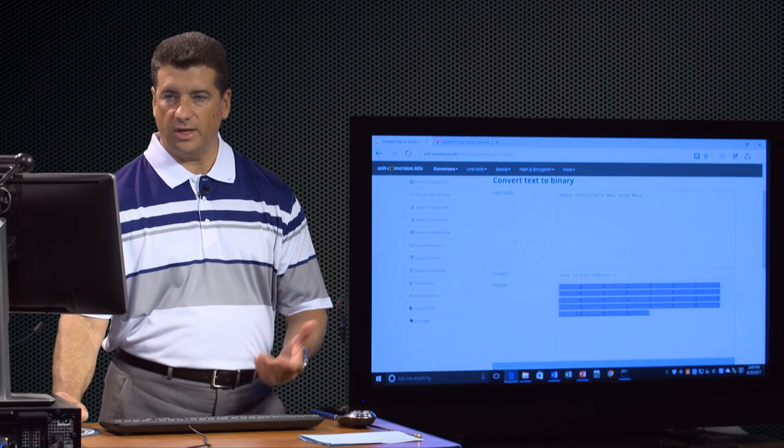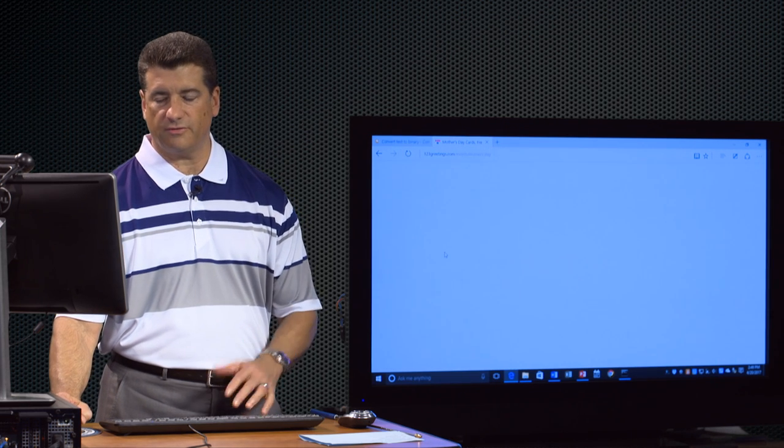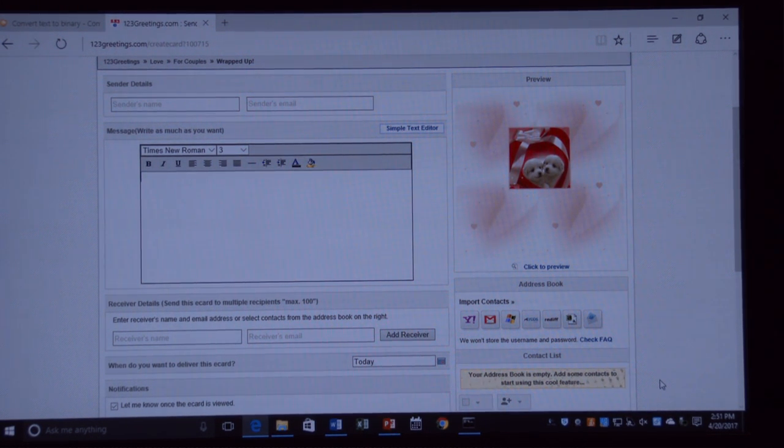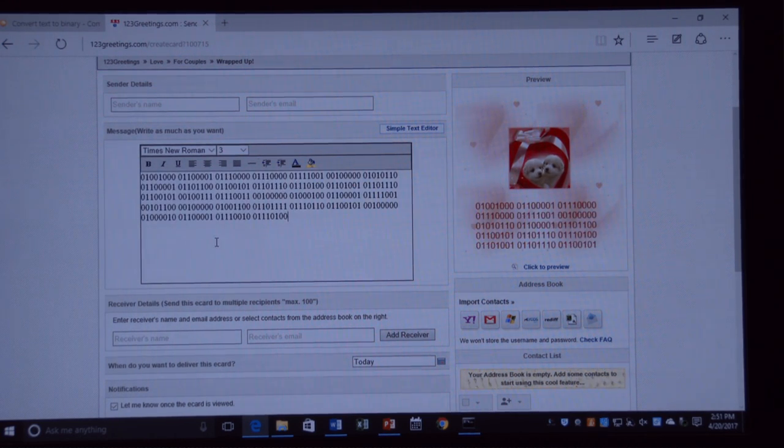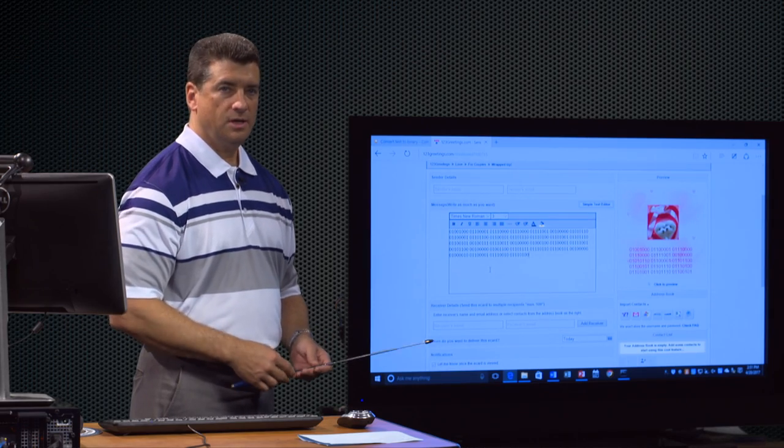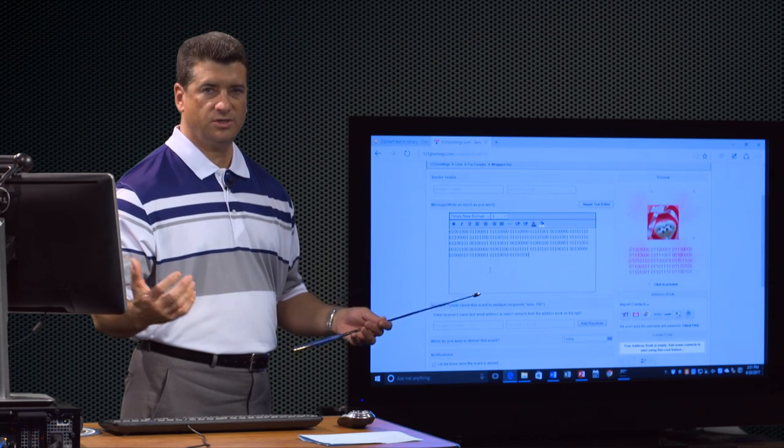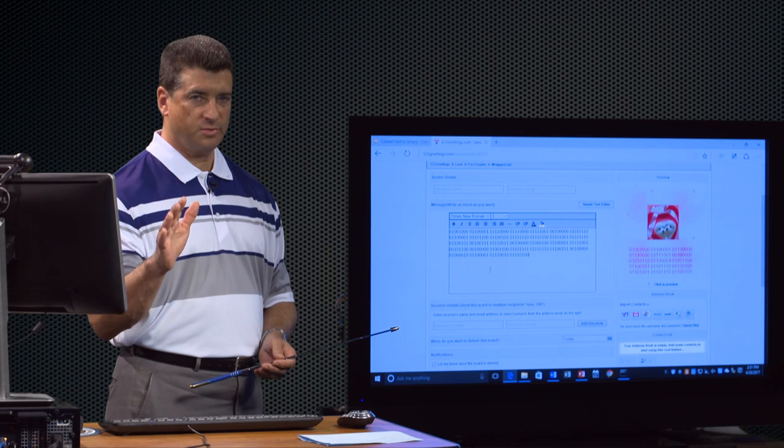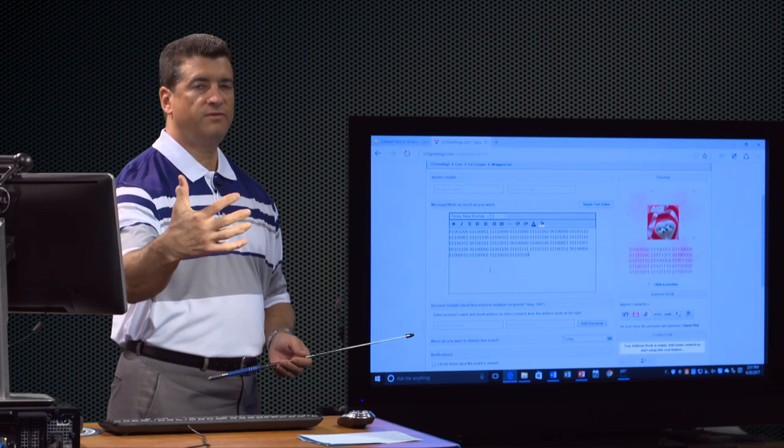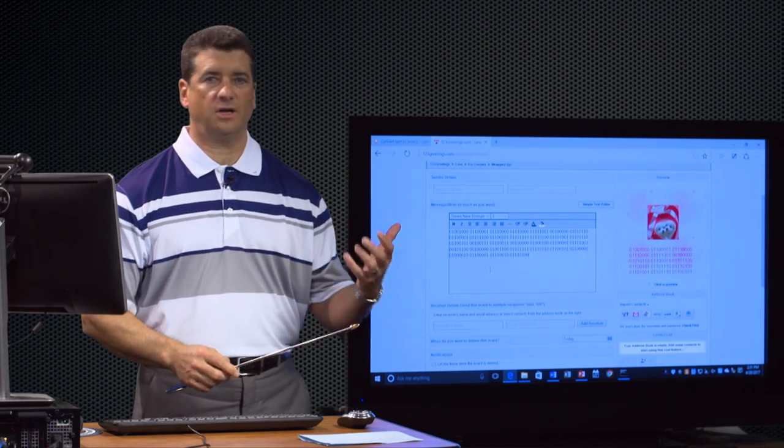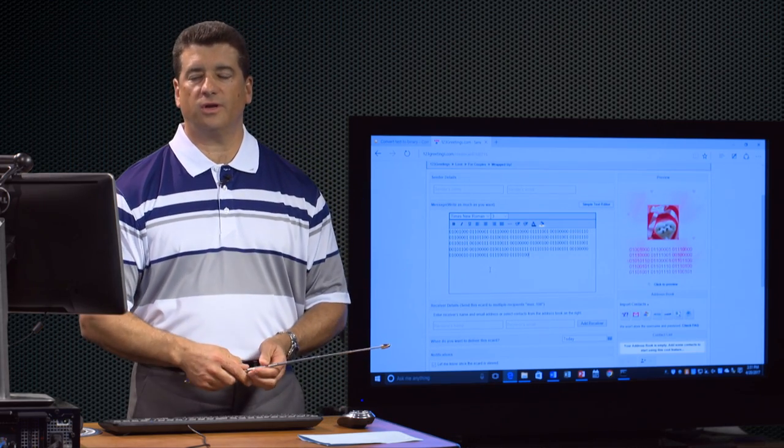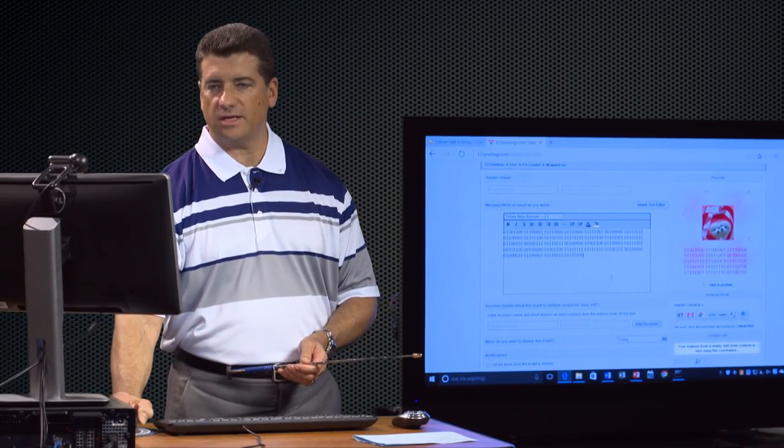Every single character has to be represented in this binary, including the spaces, the comma, if you put a dash, anything. So then what I did is I copied this binary code, and I went to an e-card website. I gave her a message like this. It was just a bunch of zeros and ones. And of course on her side, when she got it, it was just a big question mark. I sent you binary code. You have to go to a binary text converter, copy that binary, and it'll reveal the text. That's enough of the networking stuff and the binary.